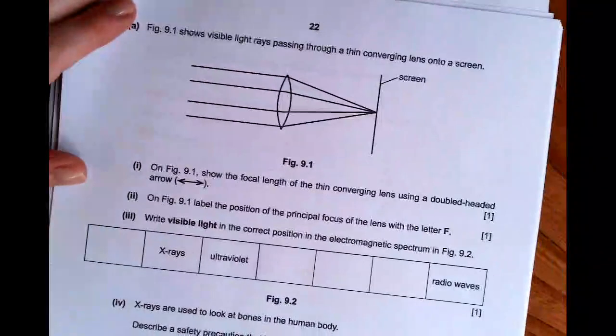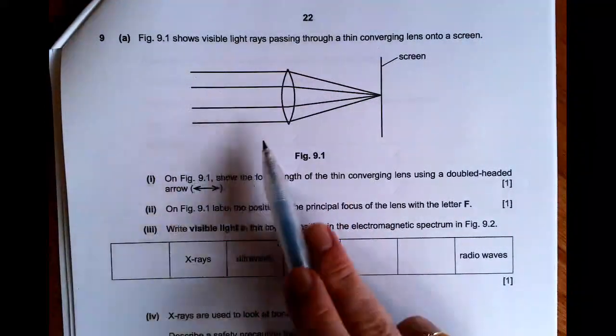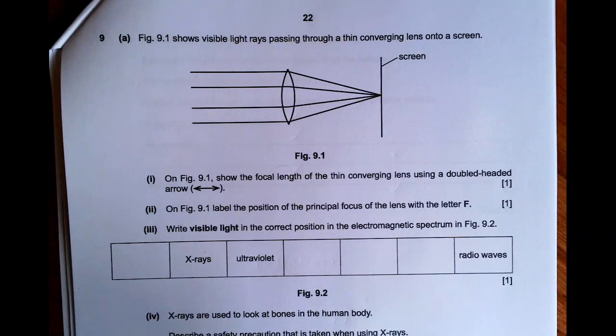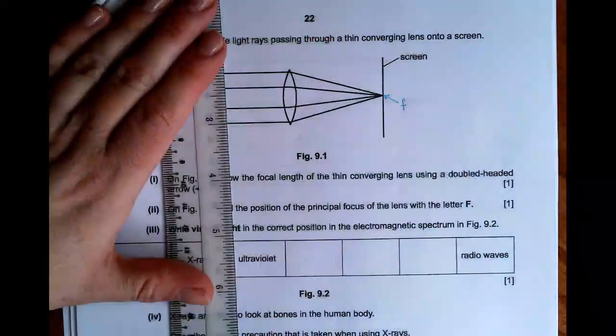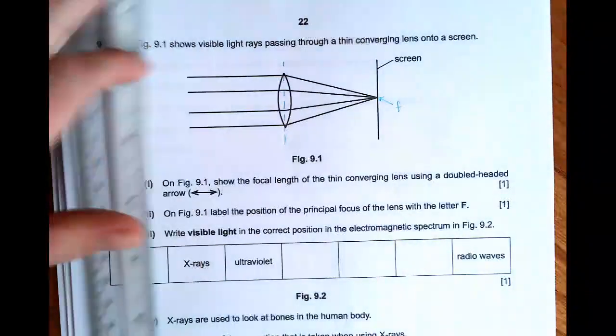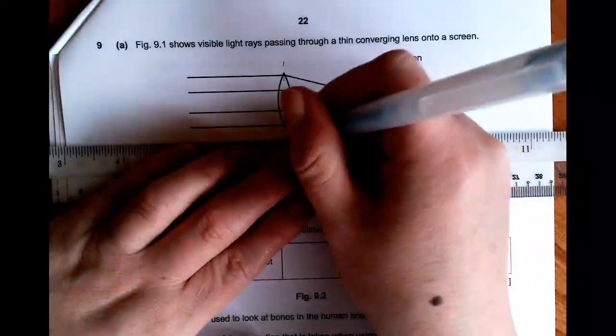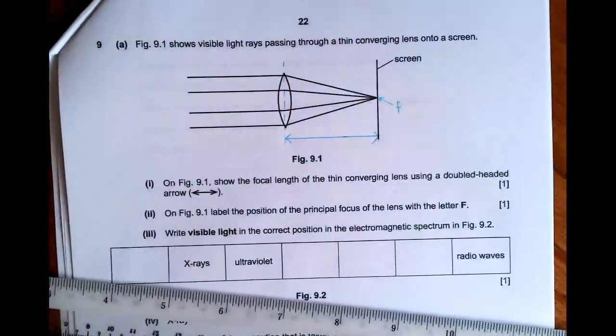Next question is number nine. So we've got a lens, some light coming in parallel to the lens, and then it converges to a point on a screen. On figure 9.1, show the focal length of the thin converging lens using a double-headed arrow. So the focal point is the point where the light rays meet. So that's there. And the centre of the lens is obviously shown by that line there. The distance from the centre of the lens to the focal point is the focal length. So that is my focal length of my lens.